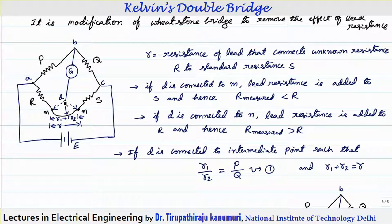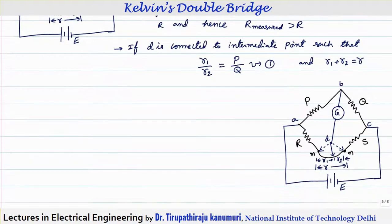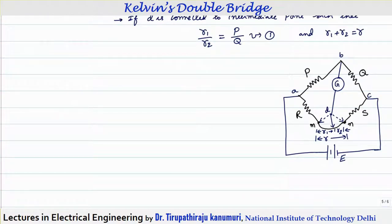In order to avoid the error, we have to connect somewhere in between this lead. Assume we have the flexibility to connect the lead on a bare conductor where we can adjust the sliding position. If the total lead resistance equals small r, then connecting at an intermediate point divides the total resistance r into two parts r1 and r2, where r1 + r2 = r. We locate this point such that r1/r2 = P/Q. Then the effect of lead resistance will be avoided.